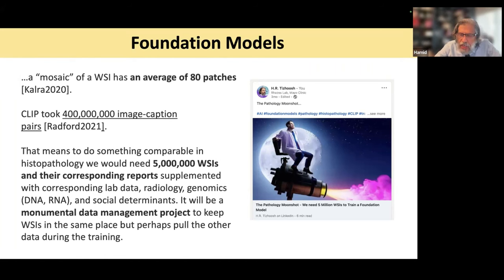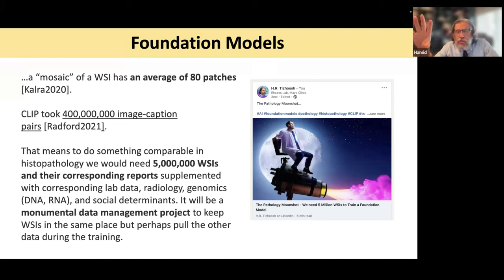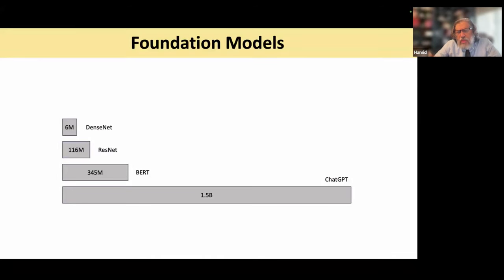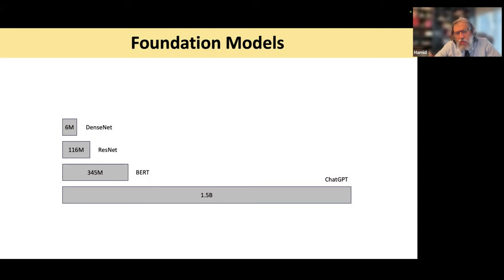The main thing about foundation models is not a new topology — we are using the same workhorse, the transformers — it's about the sheer size and what happens when linear sub-networks form inside the network beyond that critical scale. From our perspective, when we talk about foundation models, it's about what happens when you give a patch. We cannot yet put the entire whole slide image to a GPU; 8,000 by 8,000 pixels is the largest I've personally tried. Patches go through the network and get some embedding.